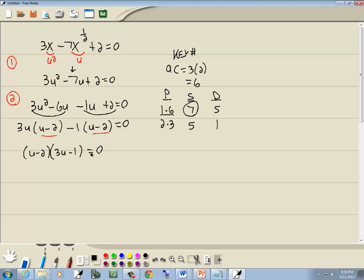Now zero factor property. If you've got zero on one side, you factor the other side, you set each factor equal to zero. So I'll set u minus 2 equal to zero and 3u minus 1 equal to zero. Now we want to solve for u. So I'll take negative 2 over, and we get u is equal to 2. Here I'll take negative 1 over, and we get 3u is equal to 1. Divide both sides by 3, and we get u is equal to 1 third.